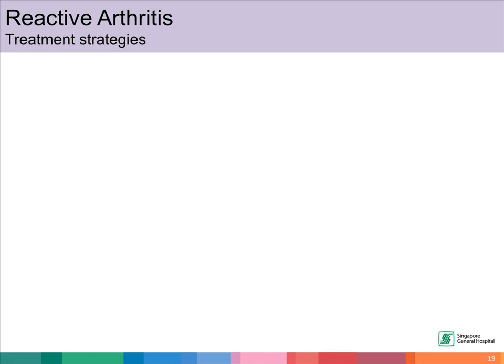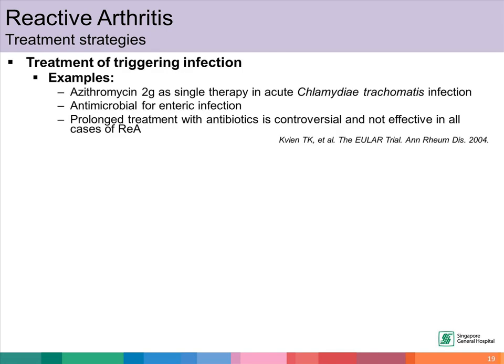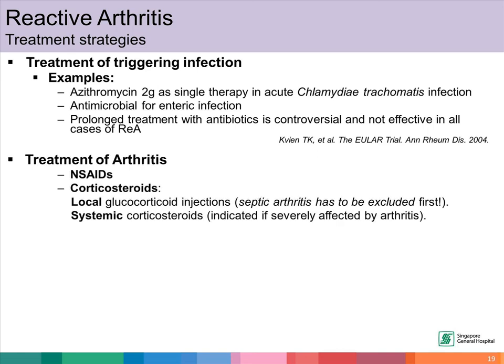Triggering infection should always be treated where possible. Examples include giving azithromycin 2g as single therapy in acute Chlamydia trachomatis infection. Antimicrobial therapy can also be given for enteric infection. Treatment of arthritis is important. NSAIDs can be given to help relieve joint pain and swelling. Corticosteroids can also be considered. Local steroid injection can be given for the affected joint; however, please bear in mind that septic arthritis has to be excluded first.